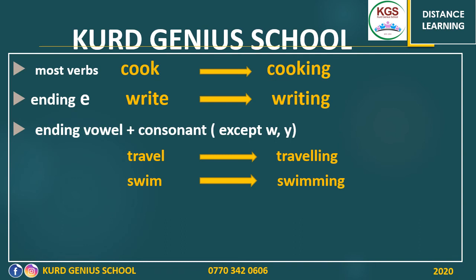What are the vowels? We have o, u, e, a, i — these are vowels. So be careful: sometimes you have to double the last letter of the verb, then put -ing.